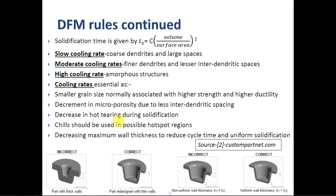Solidification time is governed by Chvorinov's rule, which states that the surface area of the cast product should be relatively higher compared to volume so that the production rate increases. Slow cooling rates cause coarse dendrites with high interdendritic spaces, weakening the microstructure, while very high cooling rates cause amorphous structures; so moderate cooling rates must be chosen. Parts with thick walls have longer solidification times, and walls should have uniform thickness so that solidification happens uniformly and thermal stresses don't develop.